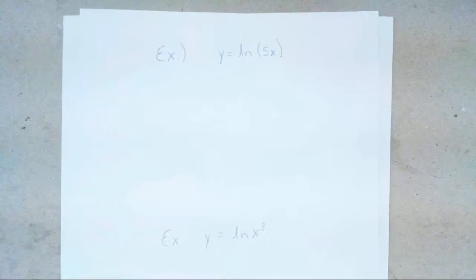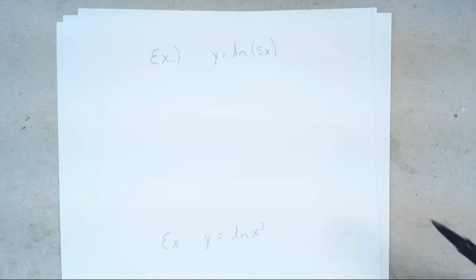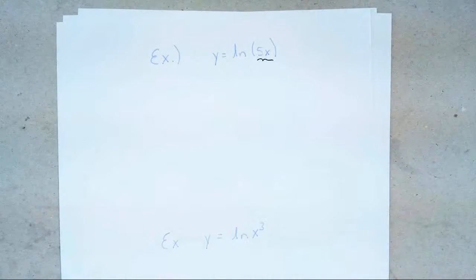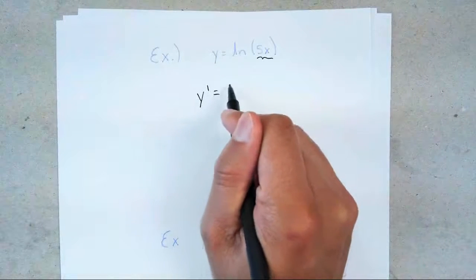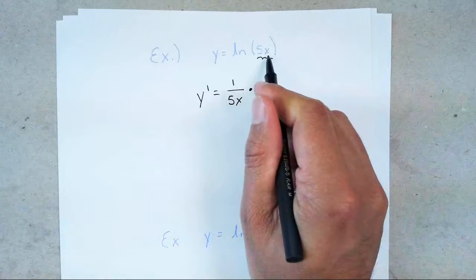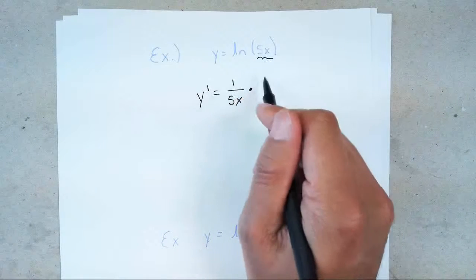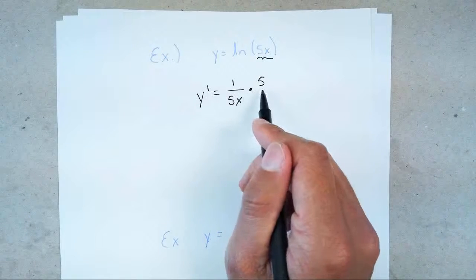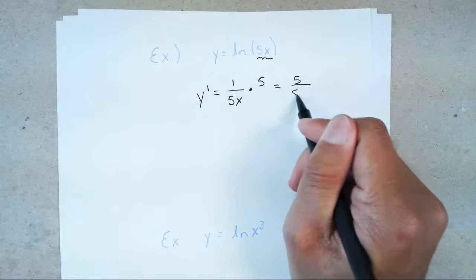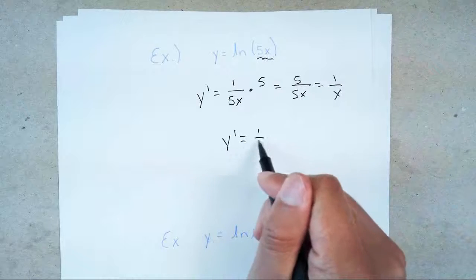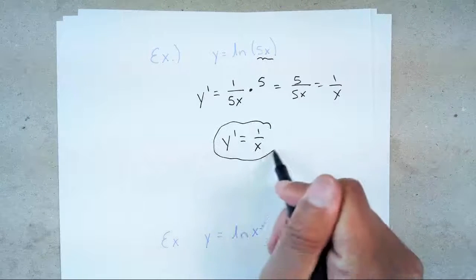Let's say we have y = ln(5x). I notice it's ln, so I figure out the inside — in this case the inside is 5x. So y′ = 1 over the inside, which is 1/(5x), times the derivative of the inside, which is just 5. That gives 5/(5x), which simplifies to 1/x. So y′ = 1/x.